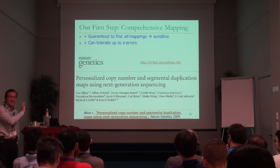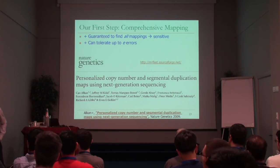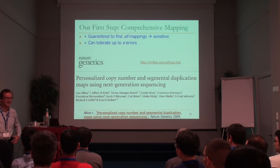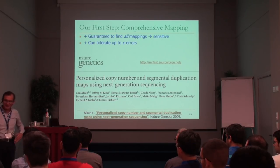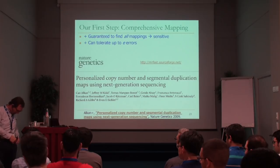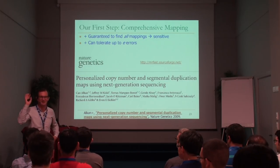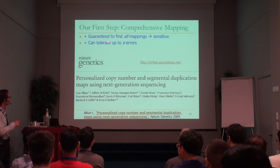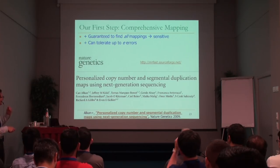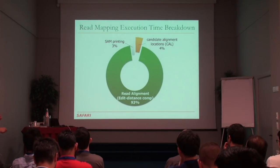When we first started, we looked at the mappers and found they were not comprehensive enough. The mapper we designed is guaranteed to find all mappings of a read — very sensitive, can tolerate many errors — but it's very slow. It's spending its time in read alignment. Read alignment is fundamentally approximate string matching: edit distance computation, defined as the minimum number of edits — insertions, deletions, or substitutions — needed to make the read exactly match the reference segment.